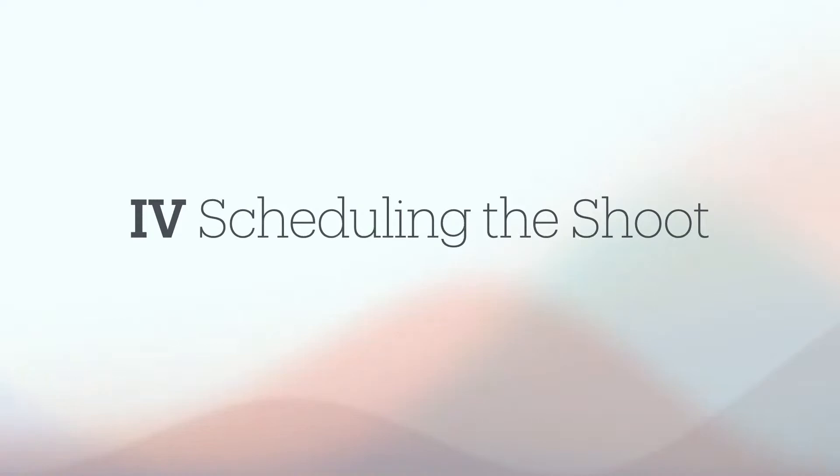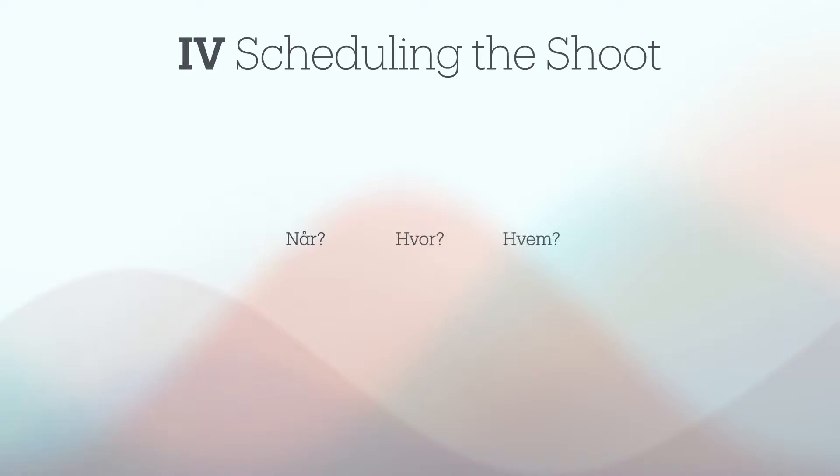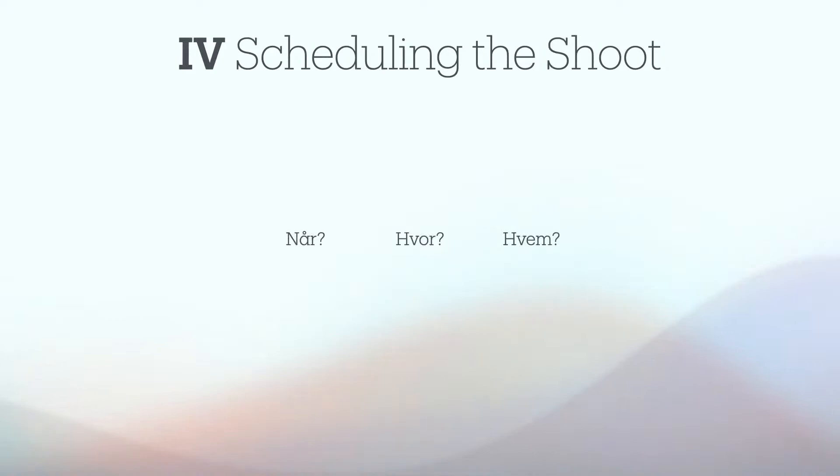Når alt annet er på plass, er det egentlig bare å sette en dato. Det vil si at produsentene planlegger hva som skal filmes når, hvor og av hvem. Resultatet blir en slags timeplan for produksjonen. Alt skal optimaliseres. Skal for eksempel filmens åpningsscene filmes på samme hotell som avslutningsscenen, så skal det filmes samtidig. Får man tid til pauser som trengs, eller tenker man en ekstra dag for at det skal gå opp? Alt må tas hensyn til, så planleggingen her er veldig detaljert.